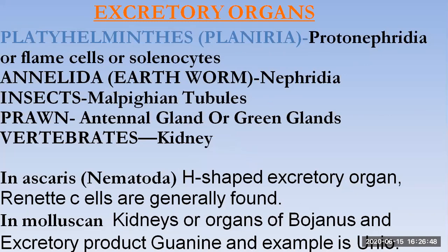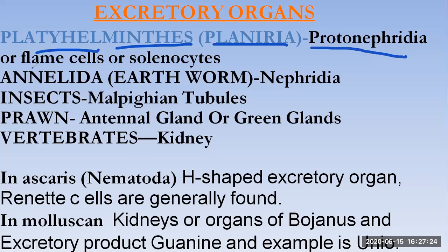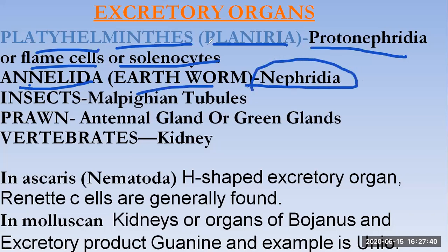Today we will discuss about the detailed excretory organs, because from phylum Protozoa up to Chordata, every individual has different excretory organs. Here they have given some examples. First, in Platyhelminthes, excretory organs have started from Platyhelminthes. Planaria has protonephridia or flame cells or solenocytes, which are considered excretory organs found in phylum Platyhelminthes.